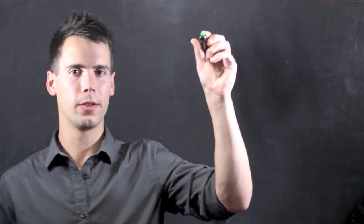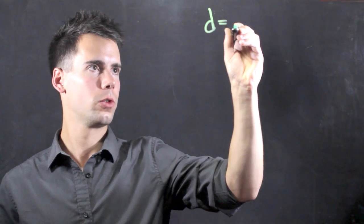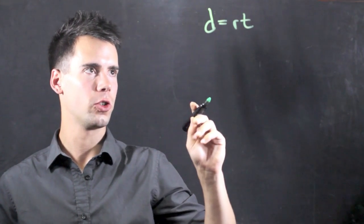Now one light year is actually a unit of distance and we can use the equation distance equals rate times time to find out how far it's actually traveling.